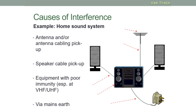Looking at some typical causes of interference, let's look here at a home hi-fi system. You could pick up interference from the aerial or from the aerial pickup cable. Speaker cables and speakers themselves can be susceptible to interference. It could be the case on the hi-fi, or the immunity of the device. Or you could get interference through the household mains.